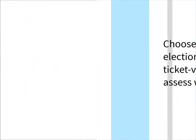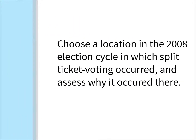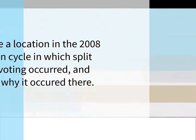The following is my class assignment. Split ticket voting occurs when voters choose one party for one office and a different party for another. The extent of split ticket voting has changed over time and in different regions. The assignment is to choose a location in the 2008 election cycle in which split ticket voting occurred and assess why it did.